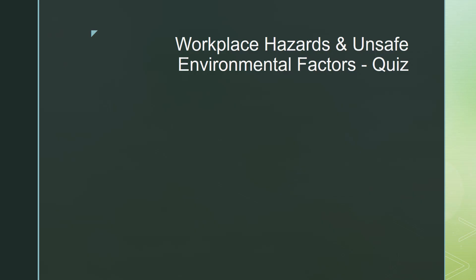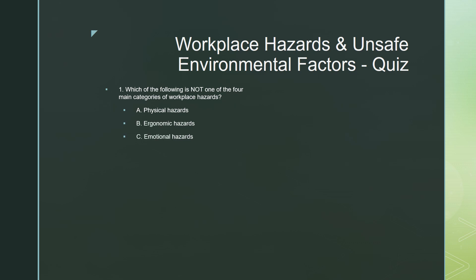Workplace Hazards and Unsafe Environmental Factors Quiz. Number one: which of the following is not one of the four main categories of workplace hazards? A — physical hazards, B — ergonomic hazards, C — emotional hazards, or D — chemical hazards.